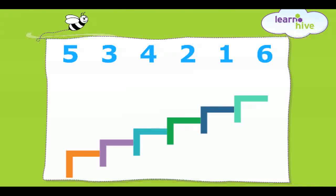Now here are six numbers which are jumbled up. These numbers are five, three, four, two, one and six. Can you put them in ascending order by labeling the steps correctly?